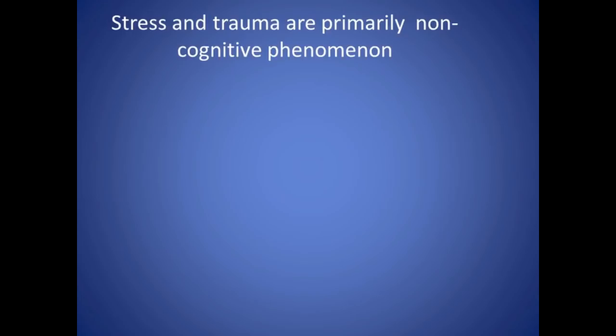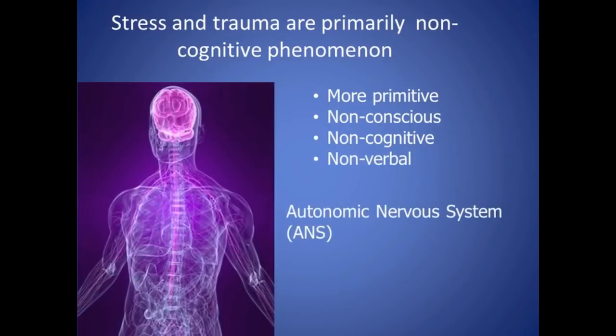But what we're learning from neuroscience is that stressful and traumatic experiences and their symptoms are primarily housed in the more primitive, non-conscious, non-cognitive, and especially non-verbal areas of the mind, namely in the autonomic nervous system.